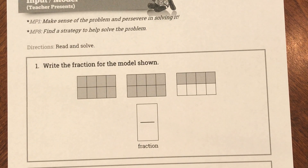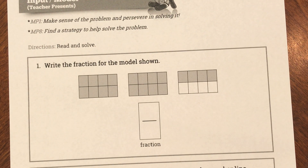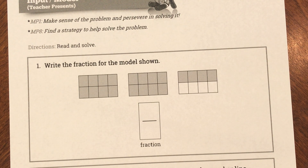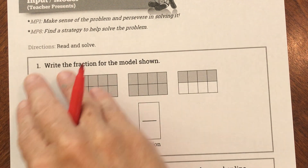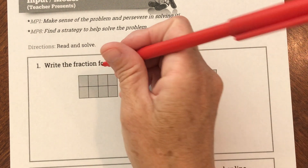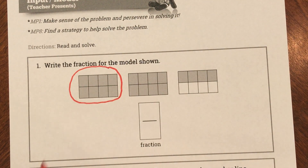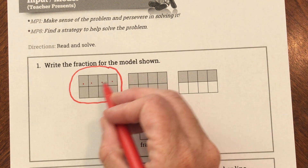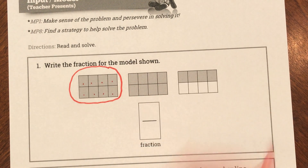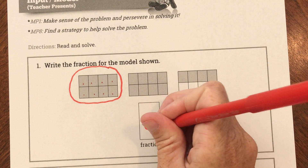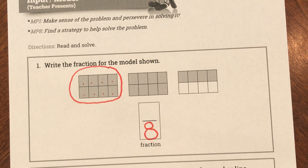My first problem says: write the fraction for the model shown. Remember, what does a denominator mean? A denominator is how many parts the whole was cut into — not how many parts all the wholes were cut into. So this is one whole. How many parts was this one whole partitioned into? One, two, three, four, five, six, seven, eight. That tells me my denominator is going to be eight, because the denominator is how many parts one whole was cut into.